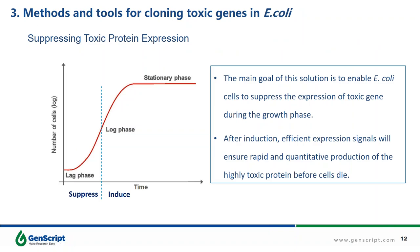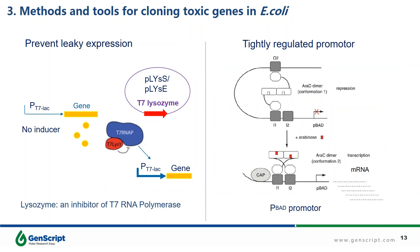Tight control of transcription and translation is the first key for successful expression of highly toxic genes in E. coli. The main goal is to enable E. coli cells to suppress toxic gene expression during the growth phase. After induction, efficient expression signals will ensure rapid production of the highly toxic protein before the cell dies. This strategy has been extensively used to express toxic proteins, and in our company we also use this method for plasmid amplification. Now let's take a look at the method using a tightly regulated promoter.